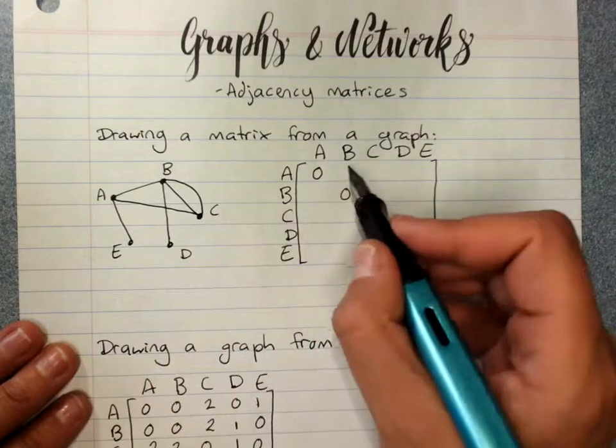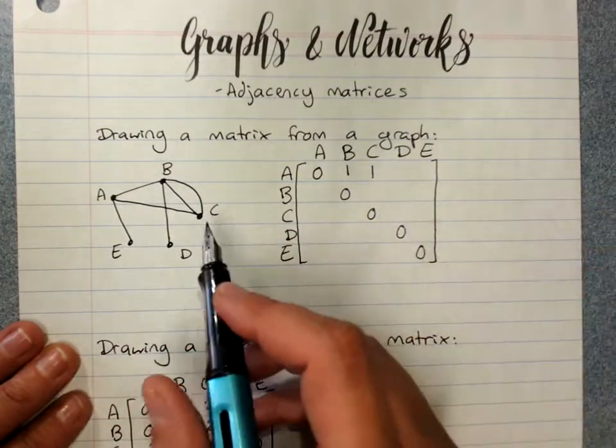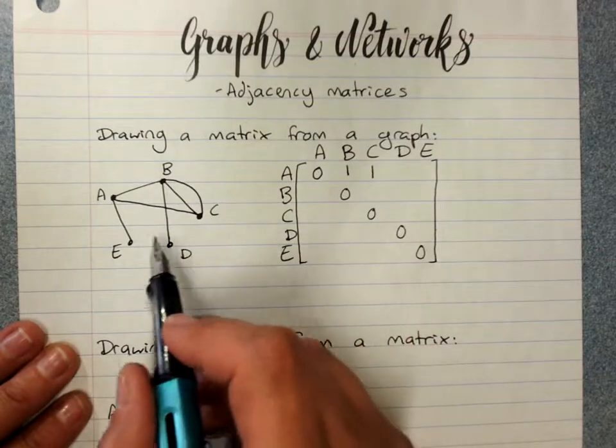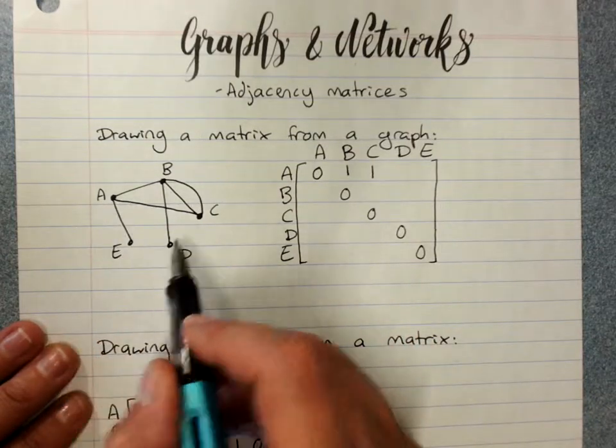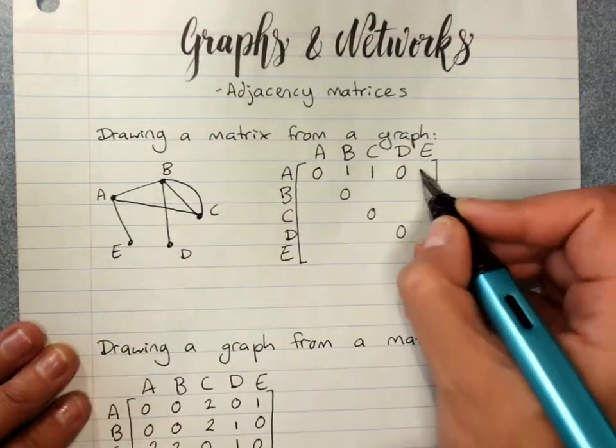A to C once. A to D doesn't go. We're looking for direct connections only. A to E is one.